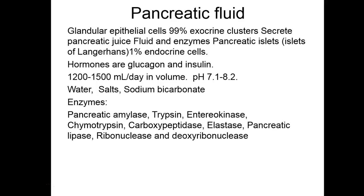We finally get to a slide with a list of the pancreatic fluids — there's also a nice chart in your book. Most of the pancreas consists of epithelial exocrine clusters that produce fluid and enzymes. The islets of Langerhans secrete insulin and glucagon. Most of the pancreas is exocrine, and we'll pick this up in the next lecture.